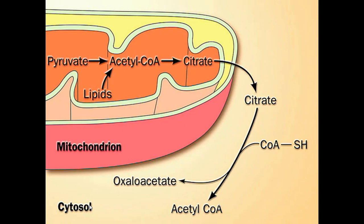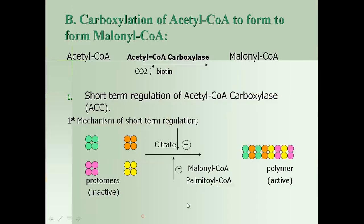This picture shows the same translocation of citrate into the cytosol, where it is cleaved again into oxaloacetate and cytosolic acetyl-CoA. The coenzyme A part is not able to translocate from the mitochondrial matrix, so acetyl-CoA condenses with oxaloacetate in mitochondria to make citrate, which is then transported out and cleaved by citrate lyase to give cytosolic acetyl-CoA.